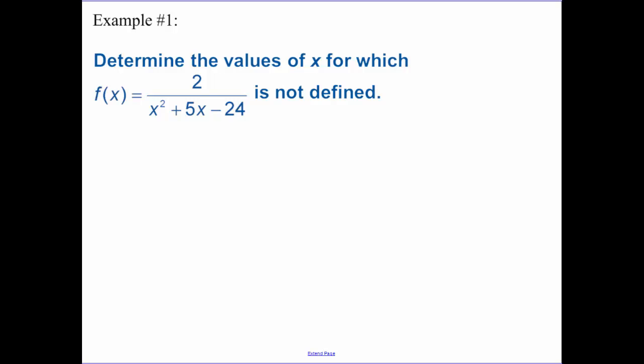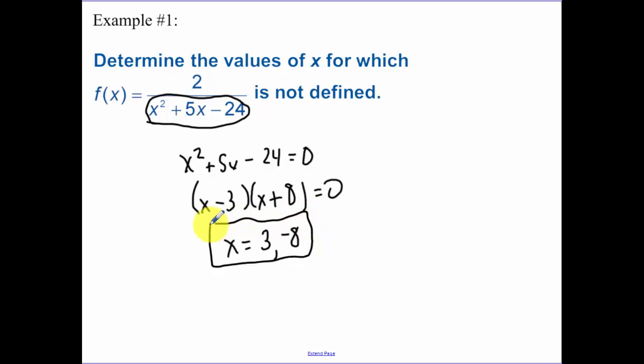State the values of x for which our function is not defined. So that's when the bottom of our function equals 0. So that's when x squared plus 5x minus 24 equals 0. So now factor that. So we have a minus plus, we would have a plus 8 minus 3. So x equals 3 and negative 8 are our values of x for which the function is not defined. So technically x cannot be those values.